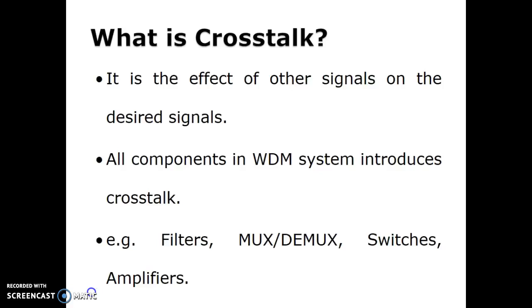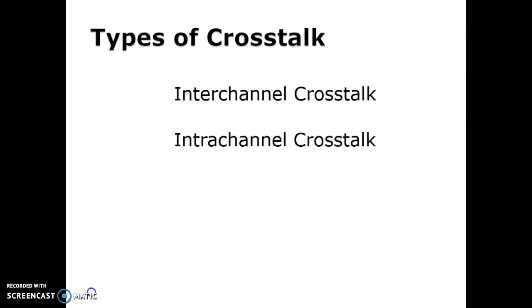Crosstalk occurs not only in the multiplexer; it also occurs in demultiplexers, filters, switches, and amplifiers. There are two types of crosstalk: one is inter-channel crosstalk, and another one is intra-channel crosstalk.